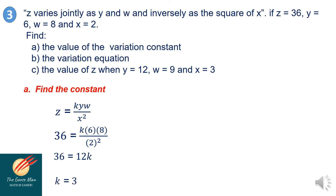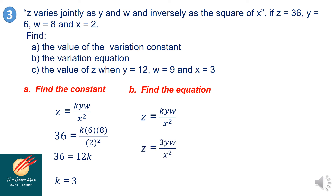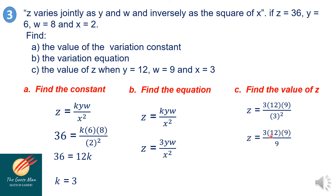Now that K is equal to 3, the equation is Z is equal to 3 times Y times W all over X squared. To find the value of Z, substitute Y is equal to 12, W is equal to 9, and X is equal to 3: Z is equal to 3 times 12 times 9 divided by 3 squared. Since 3 squared equals 9, the 9s cancel out, giving Z is equal to 36.